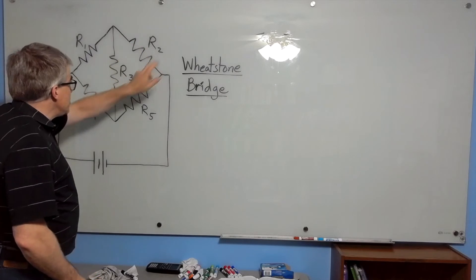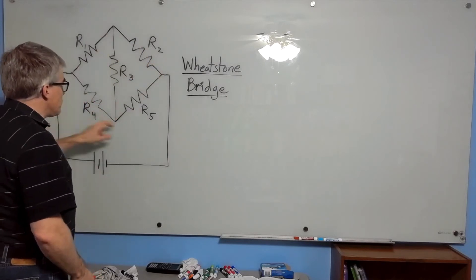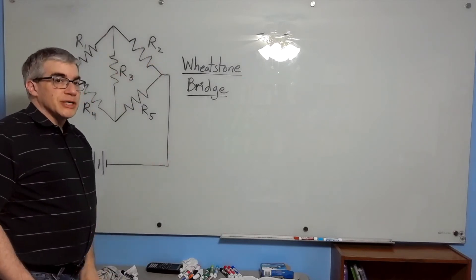R1 has two junctions, R2 has two junctions, R3, R4, R5. Nothing in this circuit is in series.